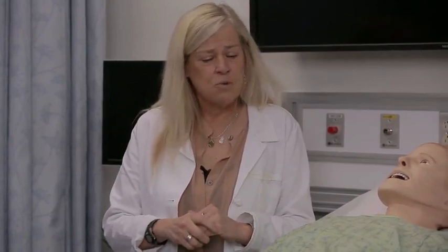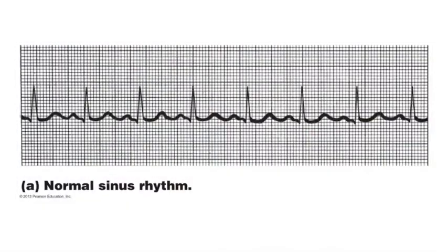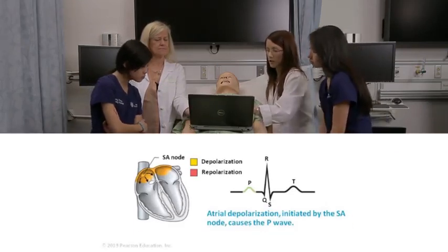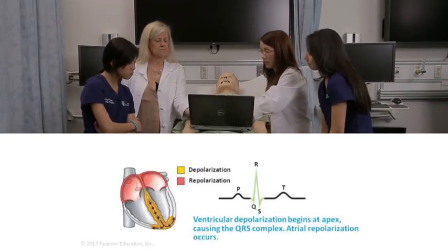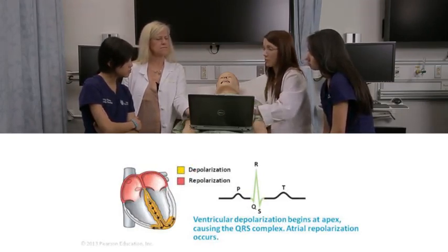Today we're just going to look at one lead — Lead II — so we're going to put on the upper and lower limb leads. Sim Man is actually able to show us a heart rate and an actual EKG. The first wave you'll see is called the P wave, which represents atrial depolarization. The second thing you see is actually a group of waves called the QRS complex — with the Q, R, and S waves — and this represents ventricular depolarization.